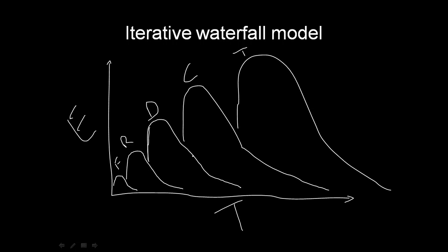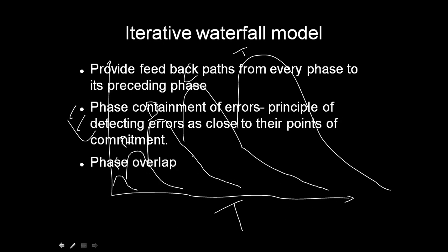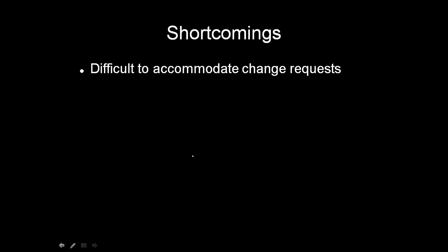Phase overlap is not centrally supported in the iterative waterfall model. In the 1970s and 80s, this iterative waterfall model was used for all software development because in those days, software was developed from scratch. But nowadays, software is not developed like that because code reusability exists — reusable codes are stored in libraries and reused in new software. Code reusability is not considered in the iterative waterfall model.